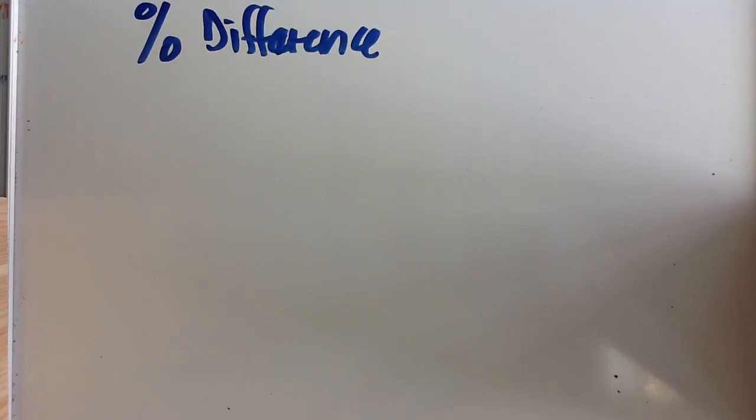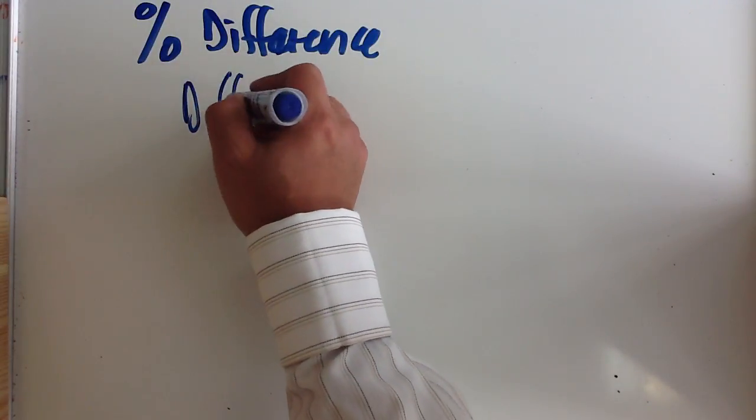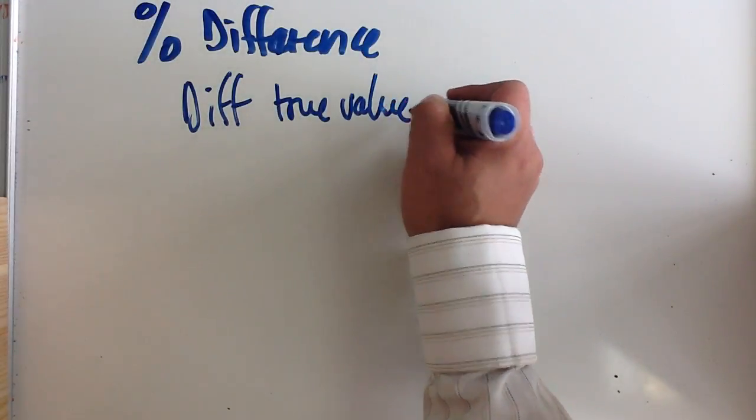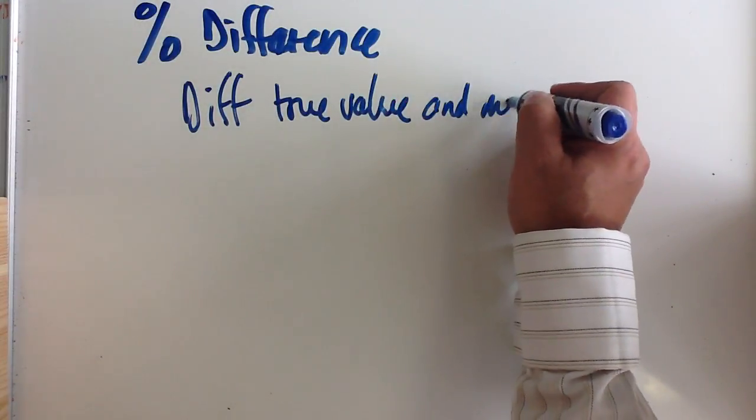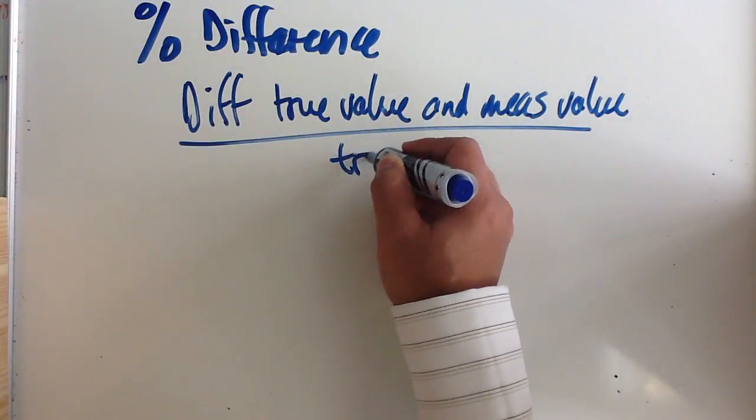Percentage difference is the difference between your true value and your measured value divided by your true value. So the difference between true value and measured value divided by your true value.